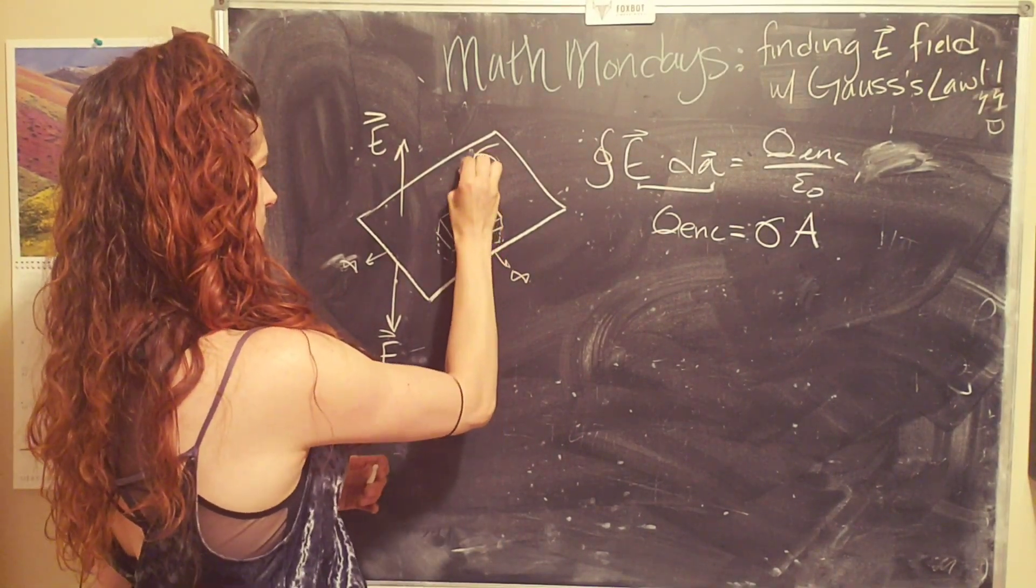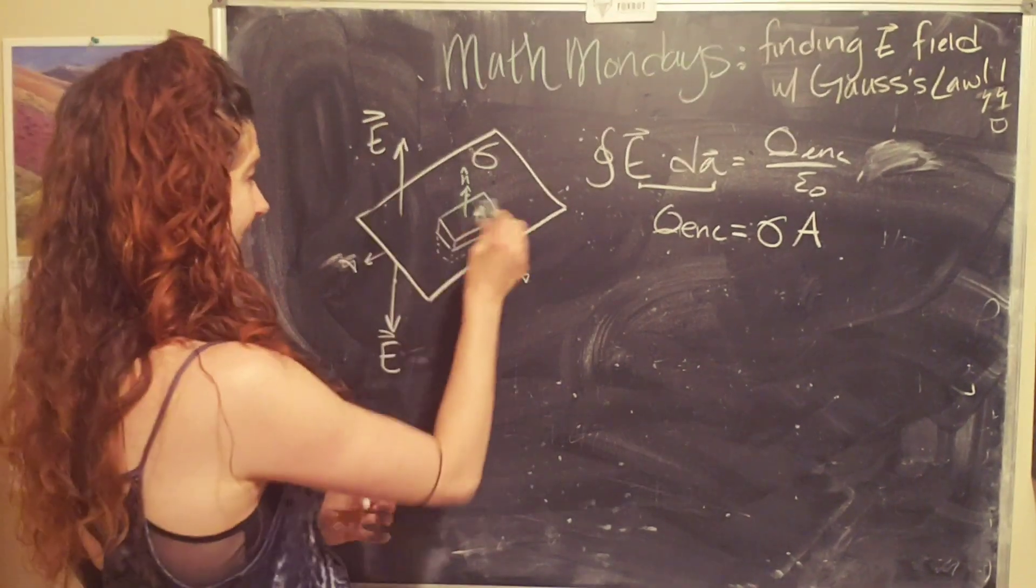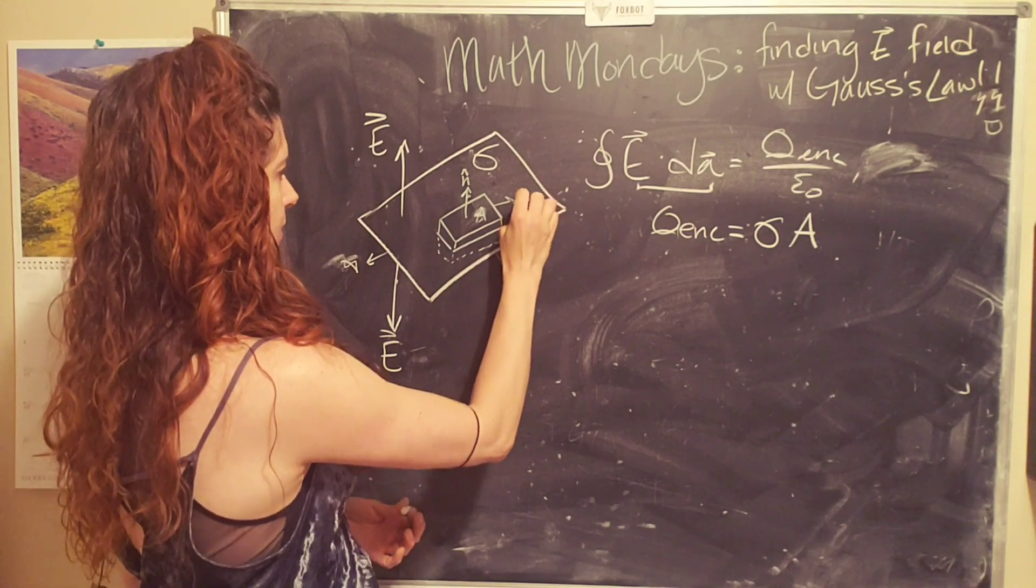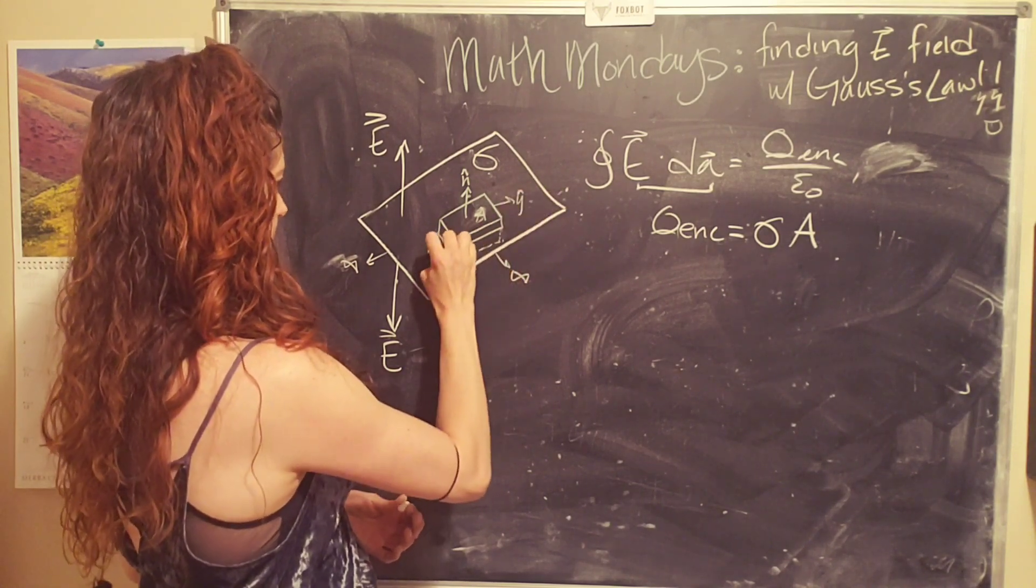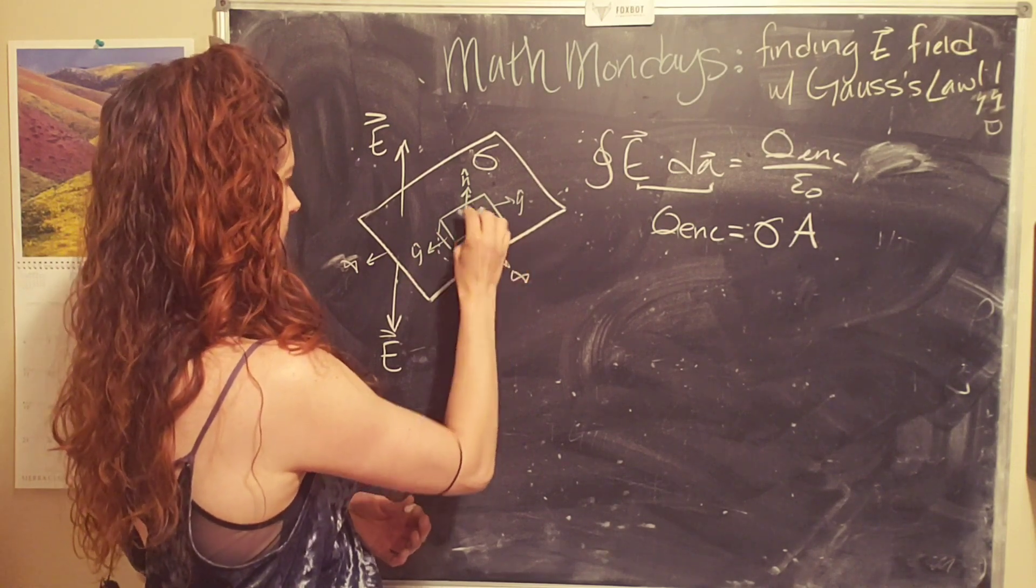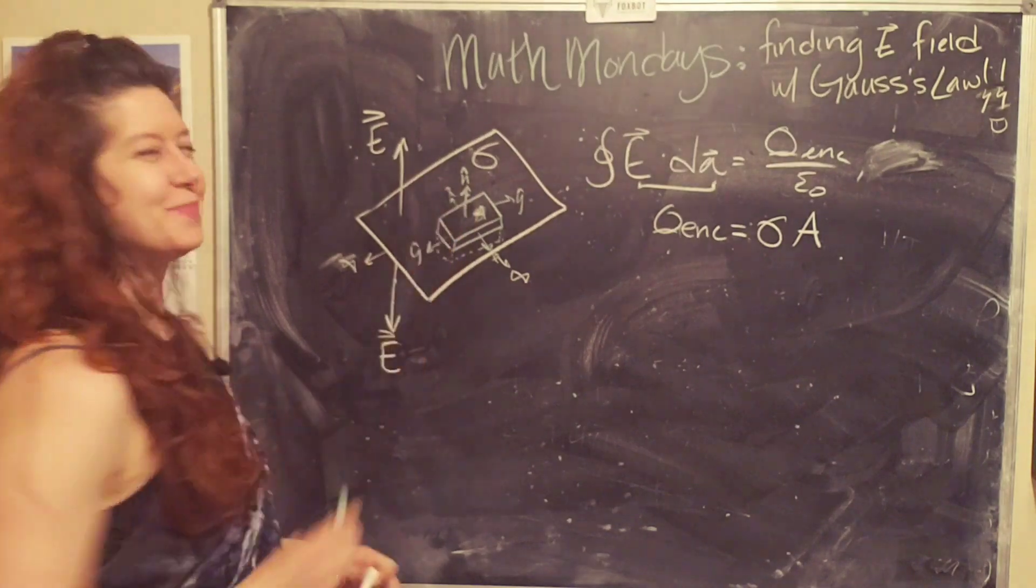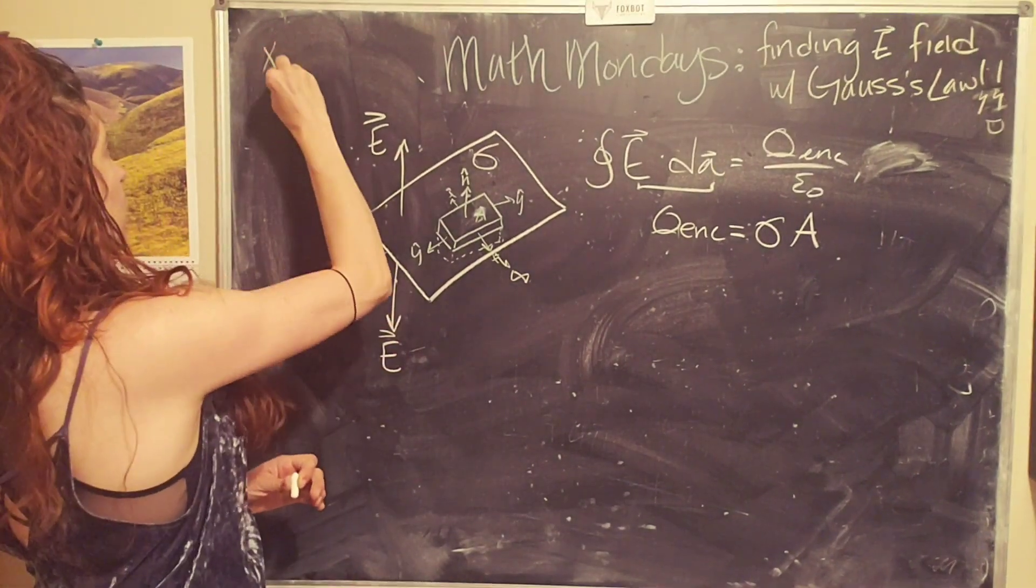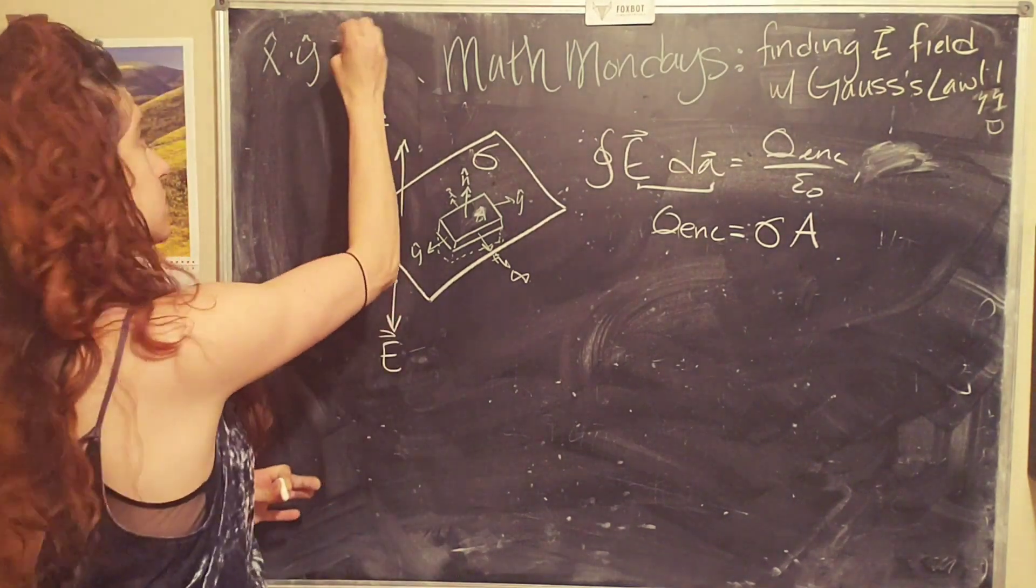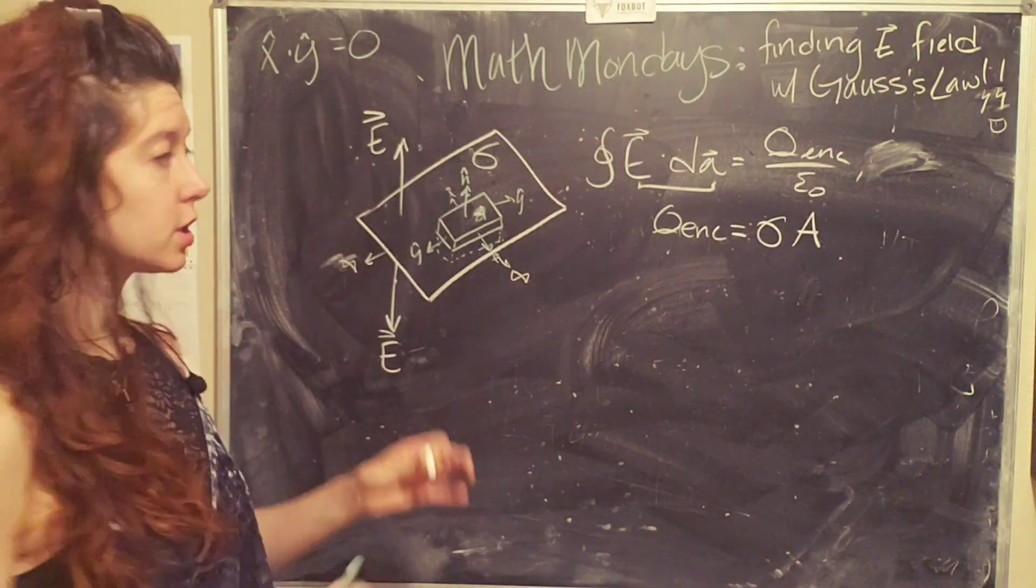So our pillbox has six different directional vectors, just like a cardboard box has six different sides. So I'm going to call this one pointing up the n hat direction. And then we have directional vectors here. I'm going to call this y hat. We have y hat in this direction. We have x hat here and here. Okay. So, just a quick reminder, the dot product of two perpendicular vectors, boom, zero.